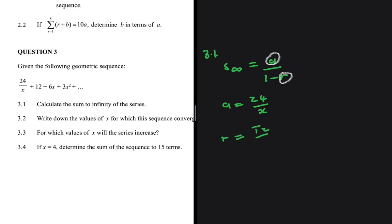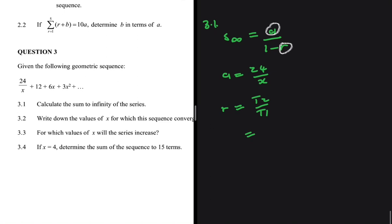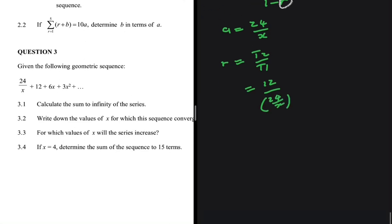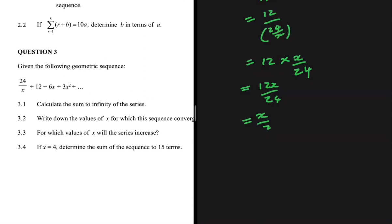Now we need r. r equals t2 divided by t1. The second term is 12, divided by the first term which is 24 divided by x. Simplifying: r equals 12 multiplied by x divided by 24, which gives us r = x divided by 2.